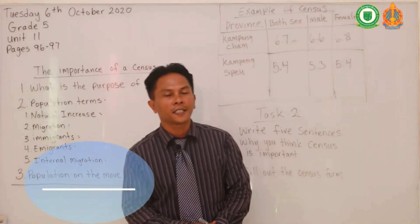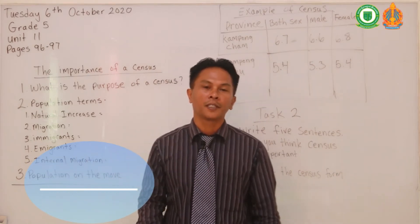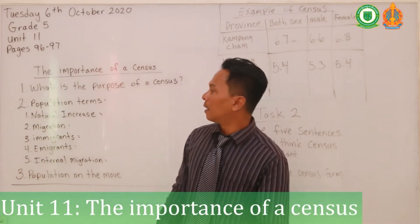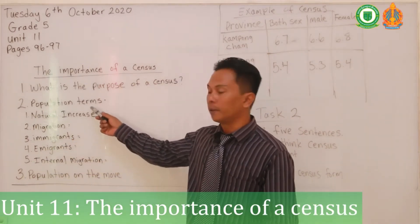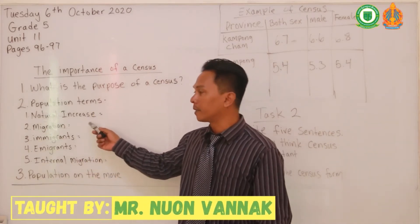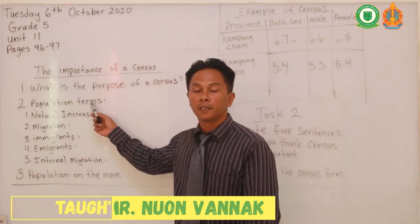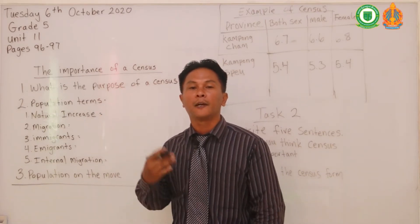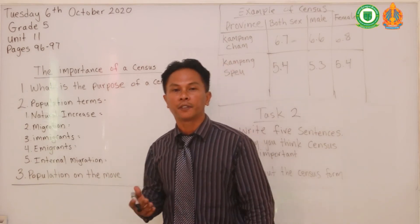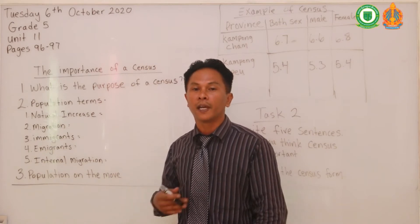Hello class and welcome to the second clip. From the first clip I told you to read pages 96 to 97 — hopefully you got an understanding of the population terms. So let's go over them now. Natural increase: when we talk about natural increase it means birth over death — births exceeding deaths in a population.